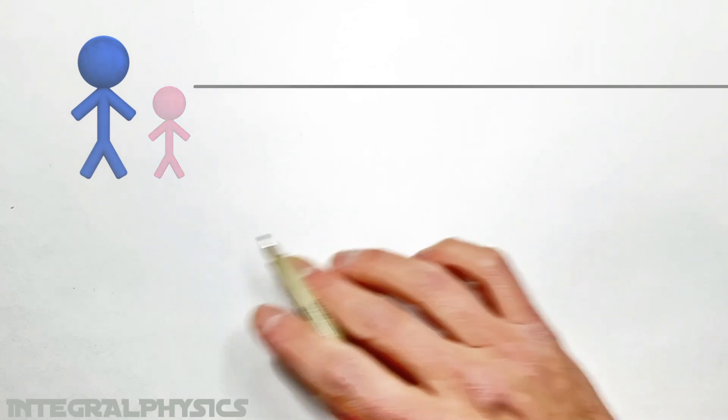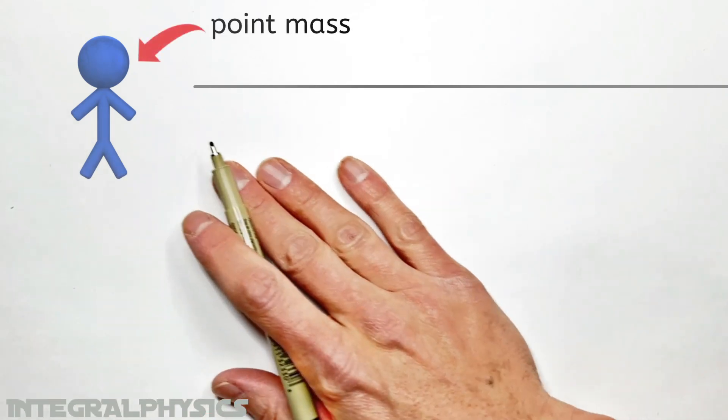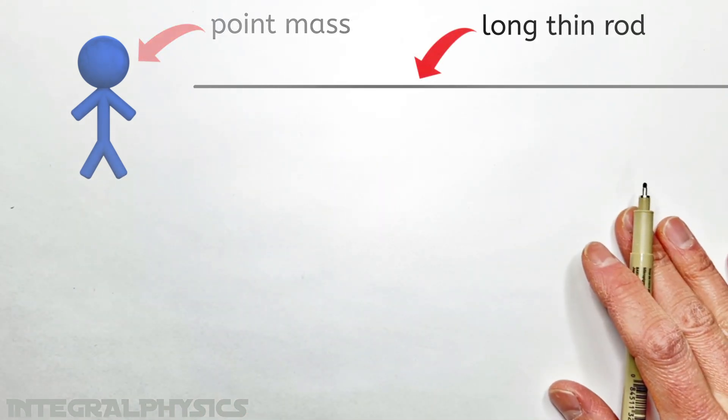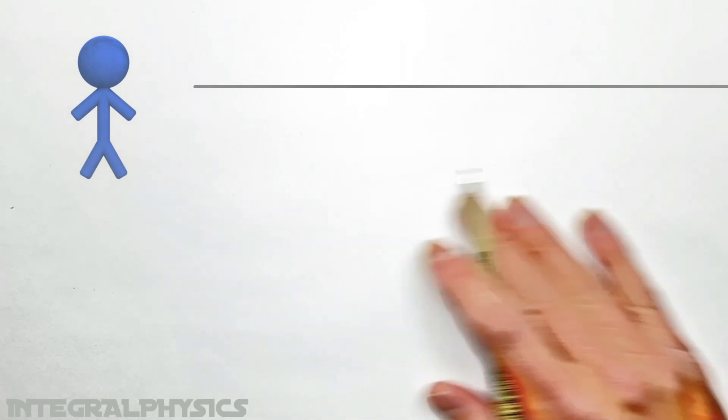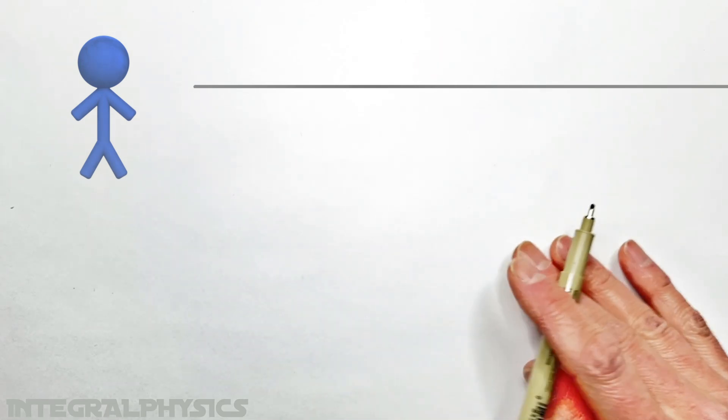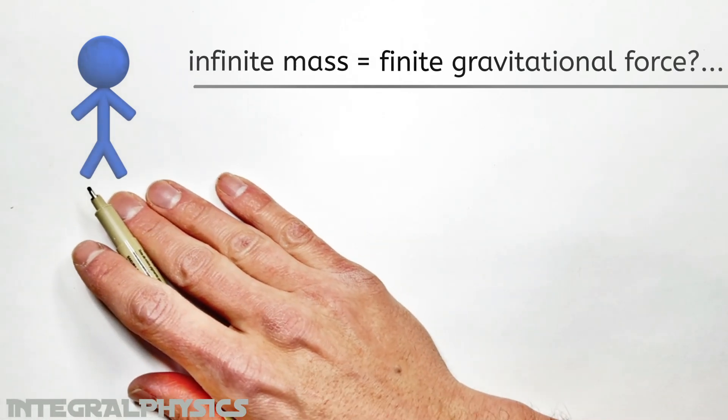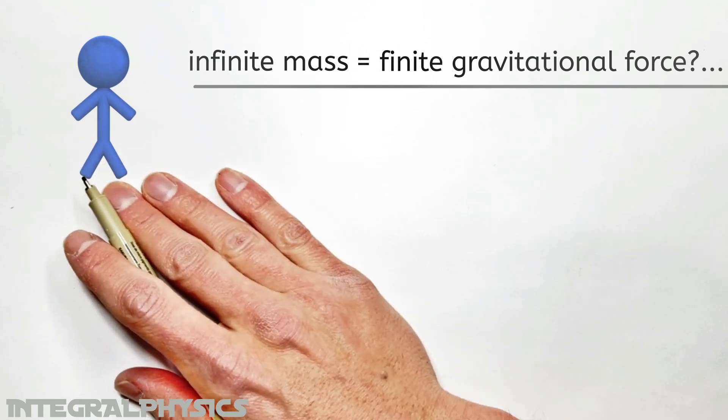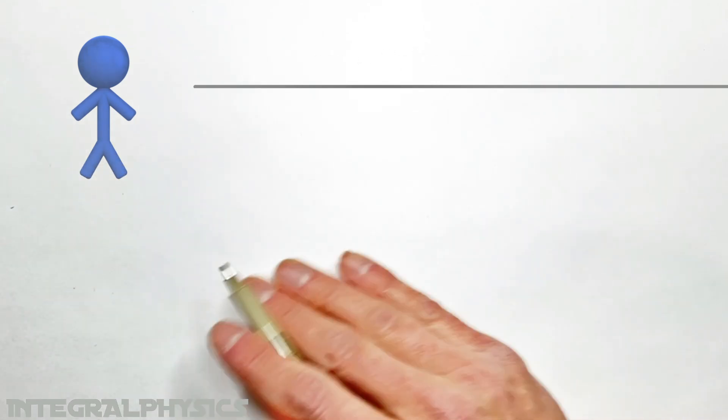You see, what we're really going to do today is derive the gravitational attraction between a point mass and a long, thin rod. And I'm going to show you that even if this noodle or rod was infinitely long and therefore infinitely massive, it will only ever produce a finite gravitational force on our little point mass over here. And that force from a noodle is actually pretty small.